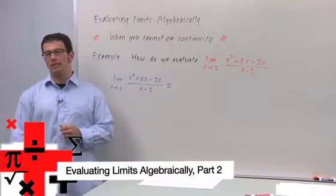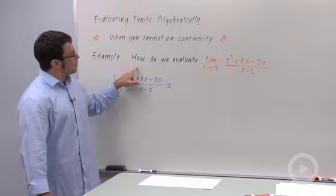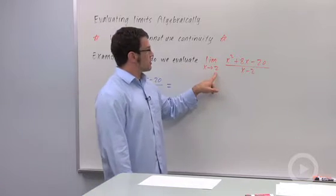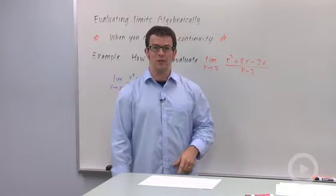Let's talk about evaluating limits algebraically when continuity doesn't work. Here's an example. How would we evaluate the limit as x approaches 2 of x squared plus 8x minus 20 over x minus 2?